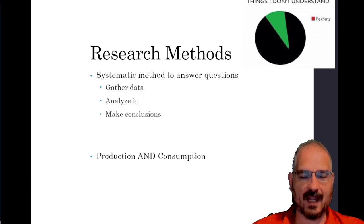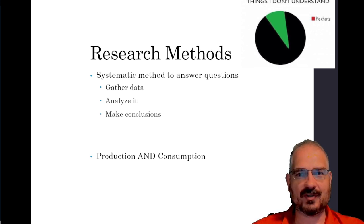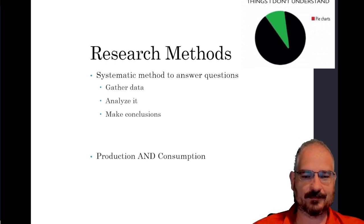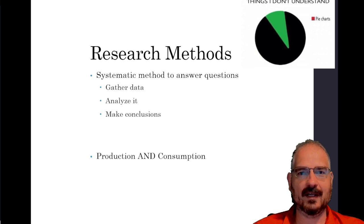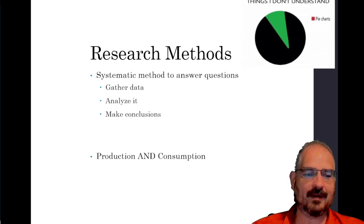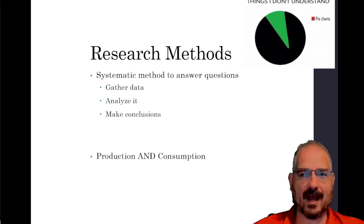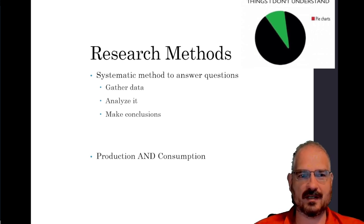The basic process is to gather data, analyze it, and make conclusions. Each one of those three major steps has lots of chances for either random error or systematic error, biases, inaccurate connections, etc. So we really need to be careful. Importantly, these techniques are both for production and consumption. Most of you will probably never become researchers, but every single person watching this video will eventually become a consumer of research. You need to know how research works so you can become a more informed consumer of scientific knowledge and know what constitutes good research and bad research.